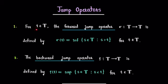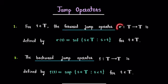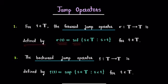For an element t in time scale T, the forward jump operator denoted by symbol sigma is a function from time scale T to T defined by sigma(t) equals the infimum of the set of all elements s in time scale T such that s is strictly greater than t.